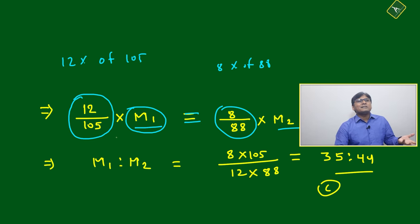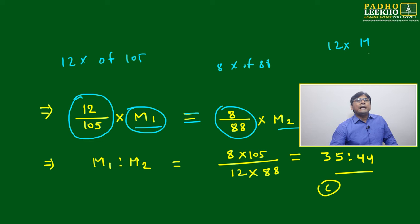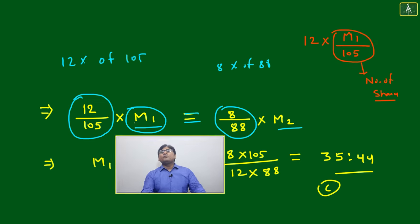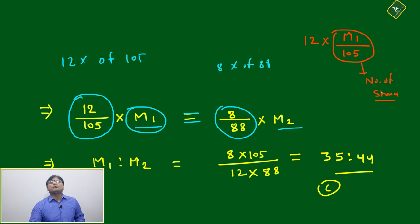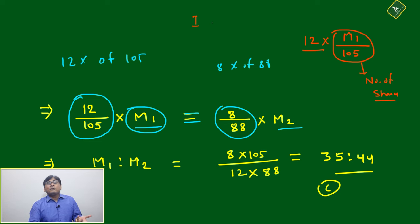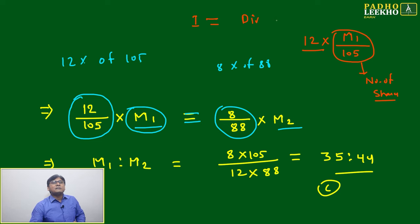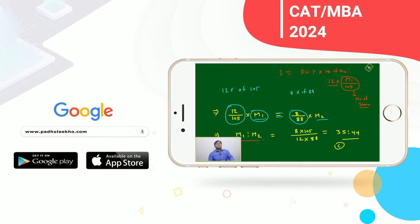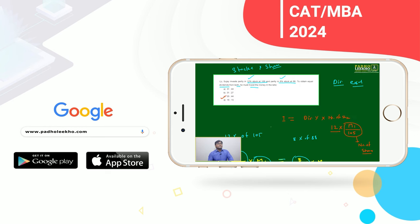The dividend amount is: dividend percentage out of market value, into total money invested. So it is 12 into m1 by 105. Number of shares multiplied by dividend percentage gives total income — total dividend equals total income. You can write: dividend percentage into number of shares, where number of shares is m1 by 105 into 12. Equating both sides, m1 ratio m2 becomes 35 ratio 44.